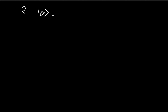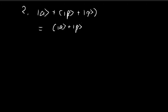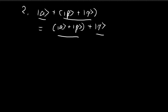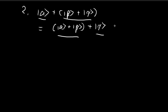The second axiom is that vector addition is associative, which means that if I have three vectors and add them, it doesn't matter which order we do vector addition in — we can add the first two and then the third, or add the last two first. You can check this is true for complex numbers. This is the associative property.